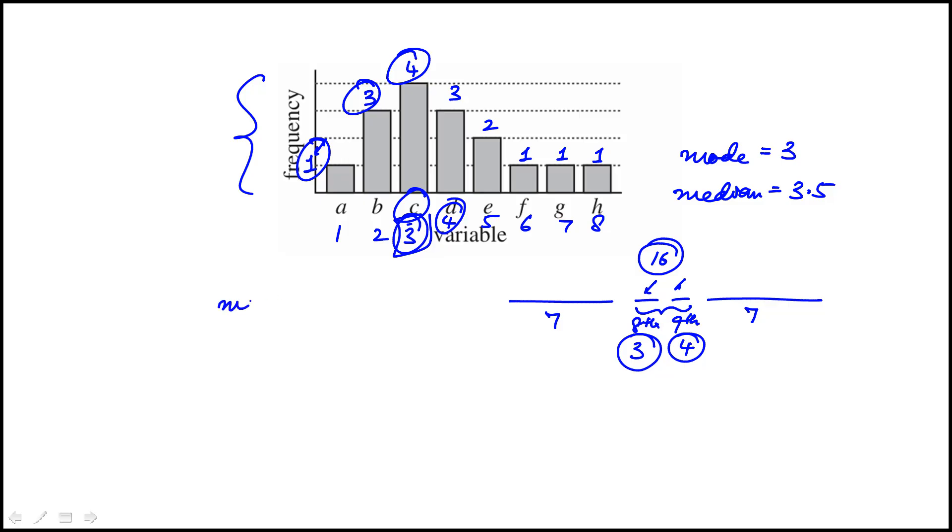To calculate the mean, I do the weighted average. The sum would be 1×1 + 2×3 + 3×4 + 4×3 + 5×2 + 6 + 7 + 8, then divide by 16. So that's 15, 21, 31, 43, 55, 61, 62. 62 over 16 equals 31 over 8, which is 3 and 7/8.